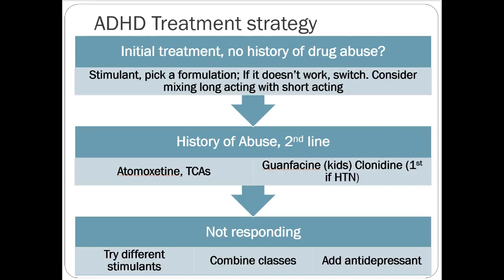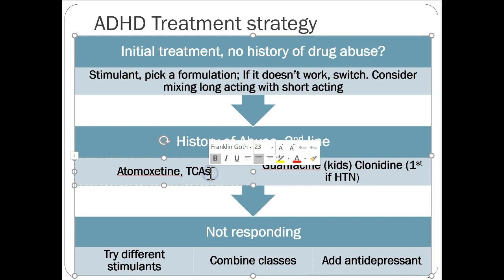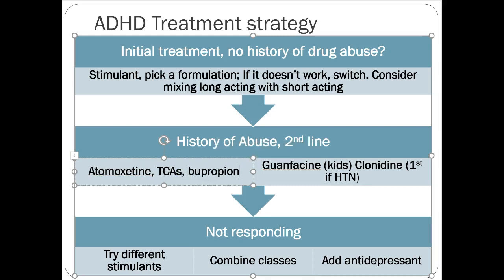For the treatment algorithm: with no history of drug abuse, start with a stimulant — pick a formulation, and if it doesn't work, switch. Consider mixing long-acting with short-acting products to bridge the patient through the day. For patients with a history of abuse or poor stimulant response, second-line options are atomoxetine or tricyclic antidepressants. Guanfacine is appropriate for kids; clonidine is first line if an adult has both ADHD and hypertension, since stimulants should be avoided.